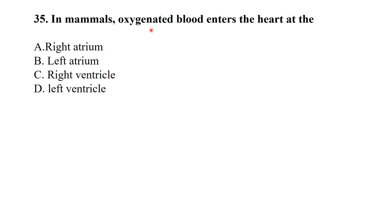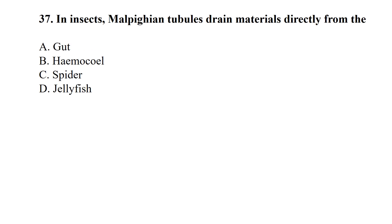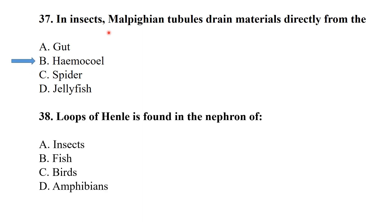In mammals, oxygenated blood enters the heart at the left atrium. Neurogenic heart is characteristic of lower invertebrates. In insects, Malpighian tubules draw material directly from the hemolymph. Loop of Henle is found in the nephron of birds.